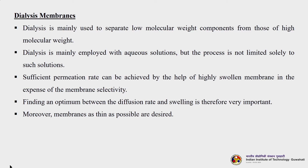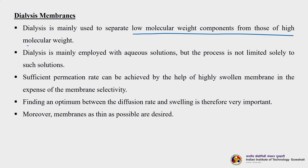Dialysis membranes are very different from membranes used in ultrafiltration, microfiltration, or reverse osmosis. Dialysis is mainly used to separate low molecular weight components from high molecular weight components and is mainly employed with aqueous solutions, though not limited to them. Sufficient permeation rate can be achieved by using highly swollen membranes at the expense of membrane selectivity. Finding an optimum between diffusion rate and swelling is therefore very important.